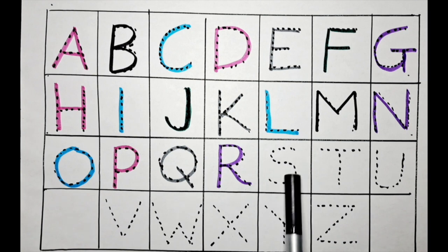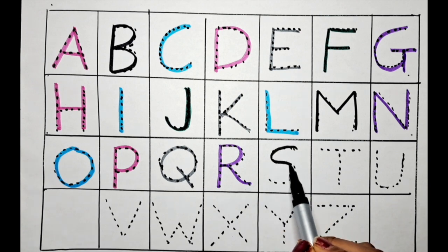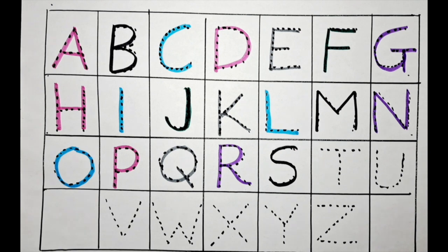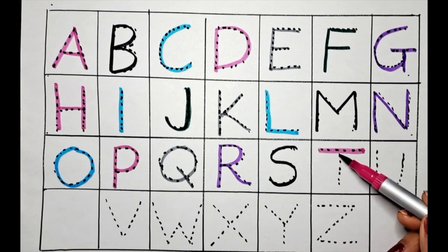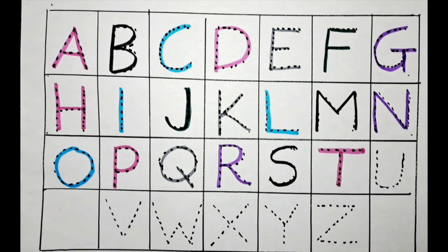Let's do a S with the black color. S for shape. The next letter is T. Let's do the T with the pink color. T for teacher.